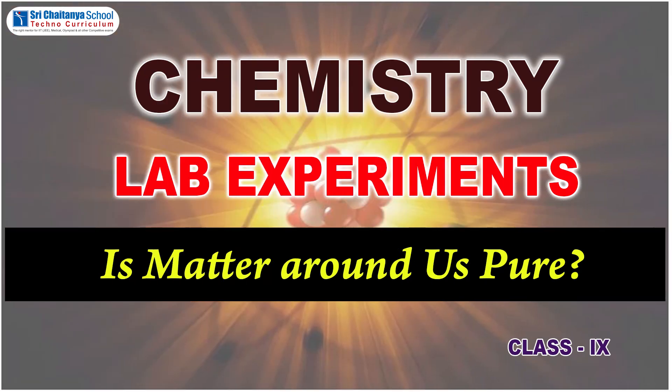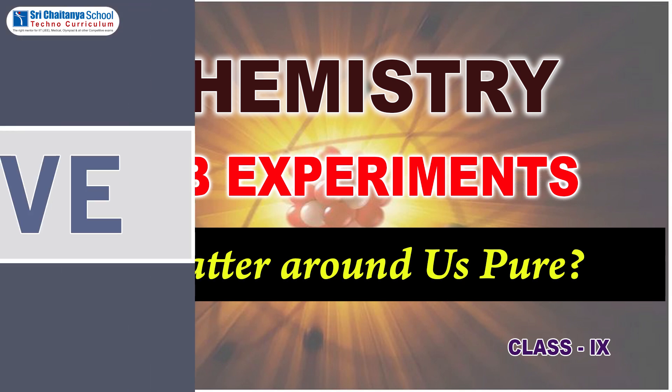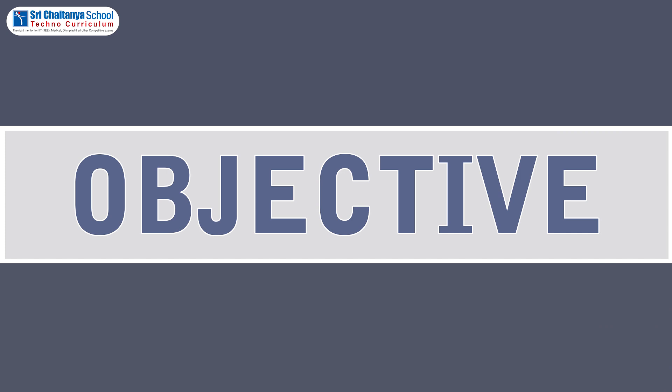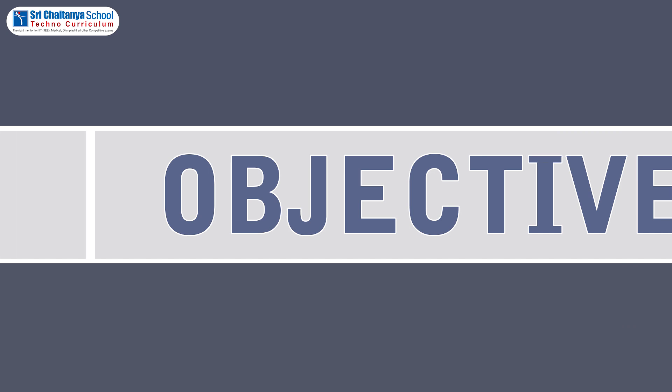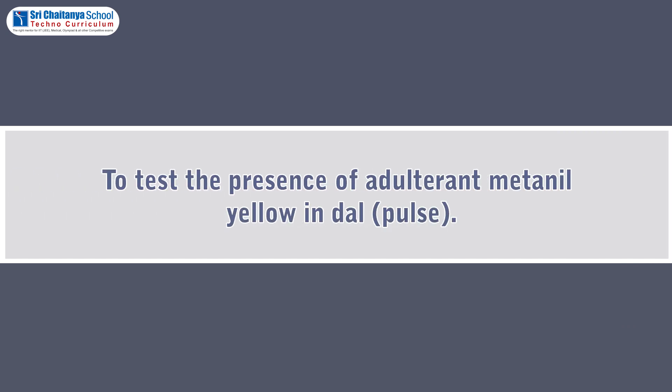Hi children. Now we are going to do a chemistry lab experiment. This experiment belongs to 9th standard and the lesson name is 'Is Matter Around Us Pure?' The objective of this experiment is to test the presence of the adulterant metanil yellow in dal.